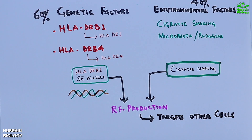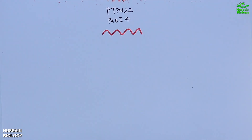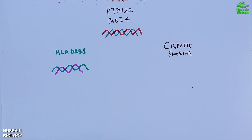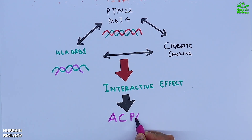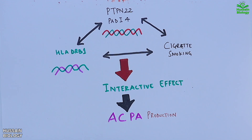PTPN22 and PADI4 genes also serve as risk factors for rheumatoid arthritis, where single nucleotide polymorphisms in these genes contribute to disease risk. PTPN22 and PADI4, along with HLA-DRB1 and cigarette smoking, show an interactive effect that drives ACPA — anti-citrullinated protein antibody — production. ACPA targets self-modified antigens in the body.